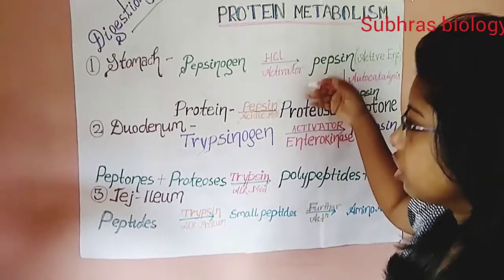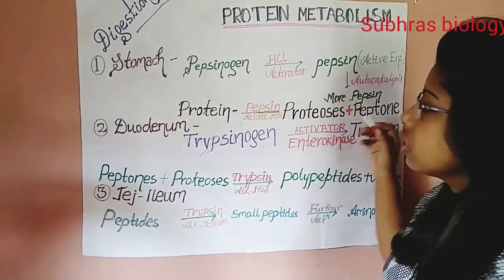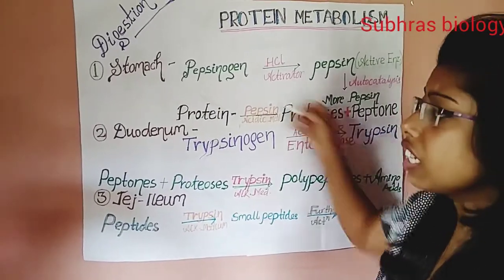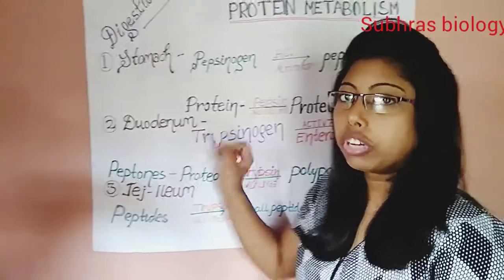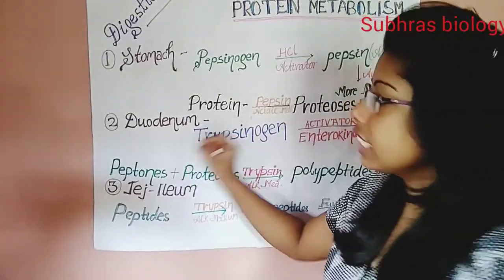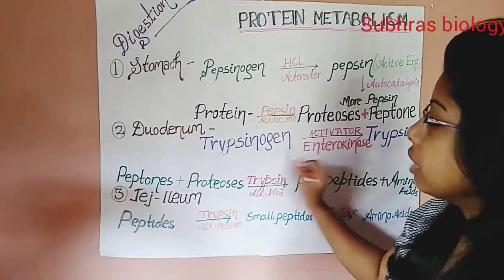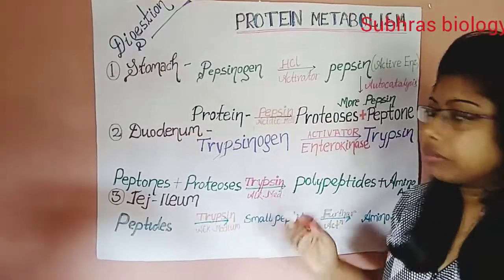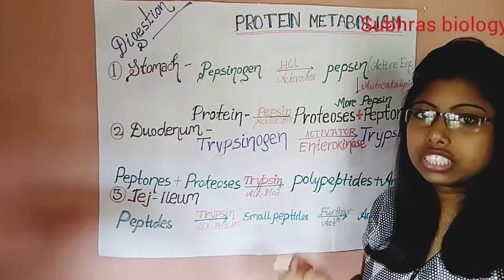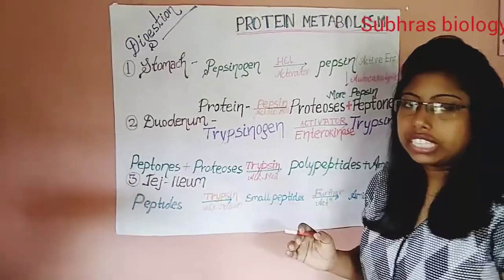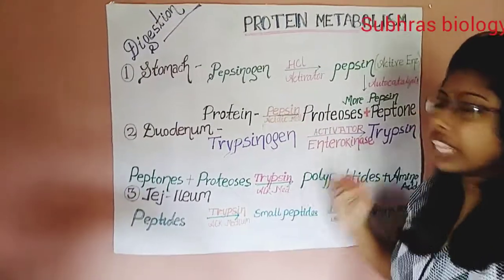These proteases and peptons — the smaller fragments of protein — then come to the duodenum, which is the first part of the small intestine. In the duodenum, there are three pro-enzymes present in the pancreatic juice: trypsinogen, chymotrypsinogen, and pro-carboxypeptidase.